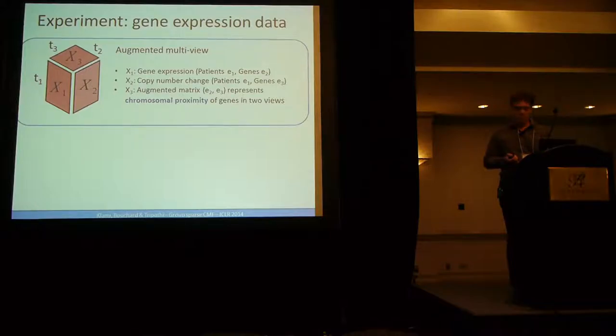Let's look at some experiments. So as I mentioned, in biology, you can have gene expression and copy number change. Here you have two views, but there is a prior assumption that the genes which are close in view one have the same number of columns in X2, and you have the proximity, the chromosomal proximity between the views. So here we have in X3 the binary banded diagonal noisy matrix which represents the proximity between the genes.